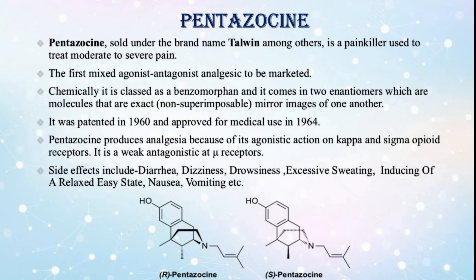Pentazocine produces analgesia because of its agonistic action on kappa and sigma opioid receptors. It is a weak antagonist at mu receptors. Side effects include diarrhea, dizziness, drowsiness, excessive sweating, inducing of a relaxed easy state, nausea, vomiting, etc.